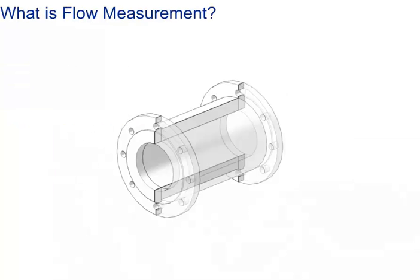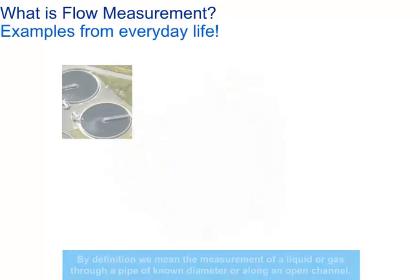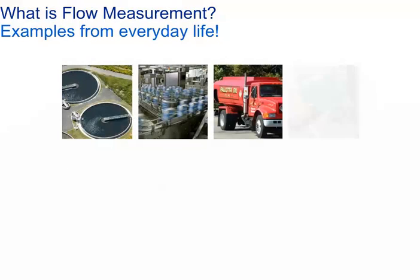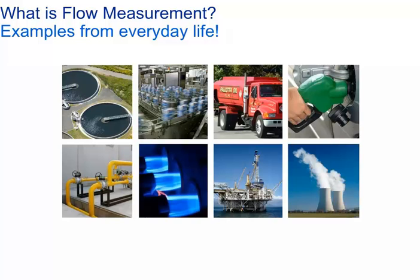What is flow measurement? It is the measurement of liquids, slurries, gases or steam in pipes or channels with a known diameter or shape. The flow is measured in rate per unit time, and the value per unit time can be mass or volume.